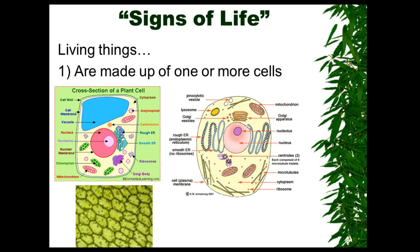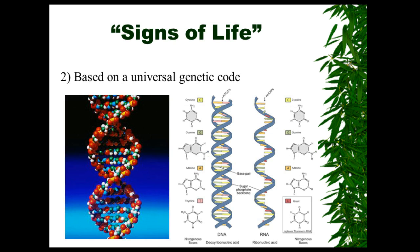You can break that down further to atoms and molecules, but once you get past that level to atoms and molecules, we're no longer talking about a living organism. Two, living things are based on a universal genetic code. All living things have a genetic code. When we talk about that genetic code, we're talking about DNA and RNA.